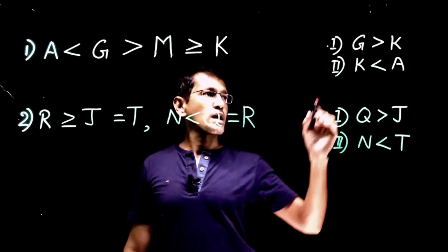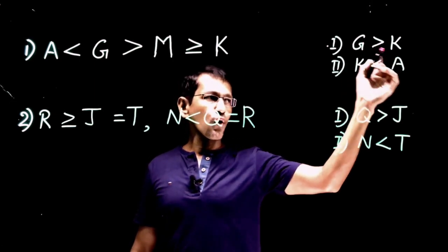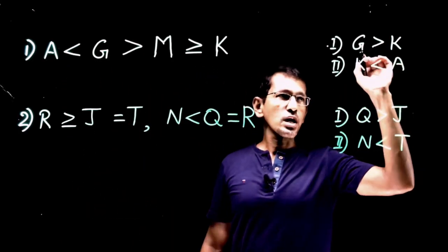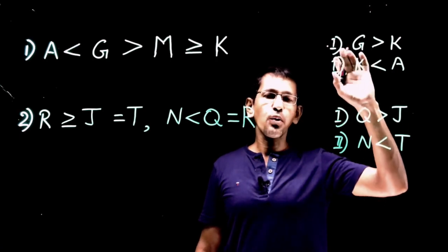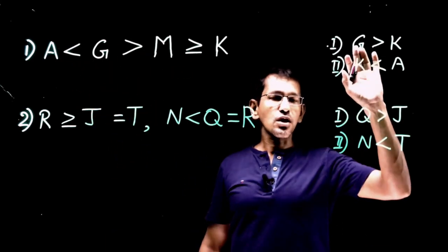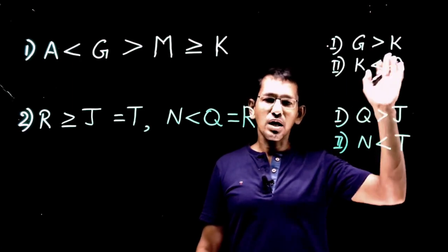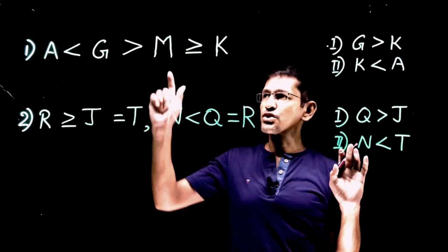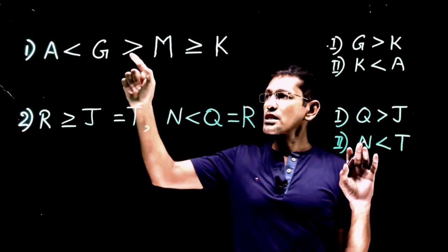Now look at conclusion number one: g is greater than k. We need to check whether this conclusion follows the statement or not. The conclusion follows only if it is valid for all possible situations — all possible values of g, k, m, and a, whether positive, negative, or irrational. So we need to check whether g greater than k is valid for all possible values.